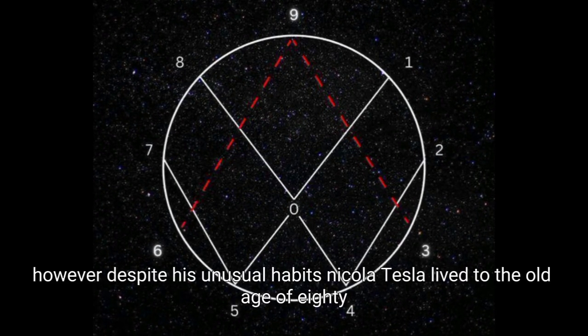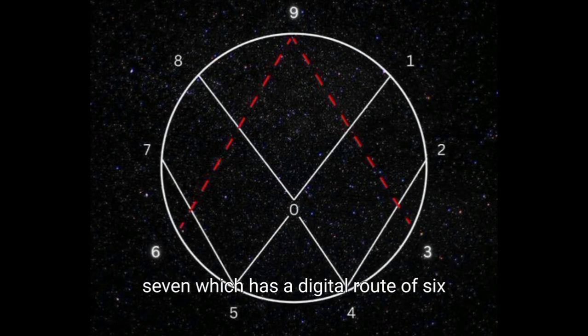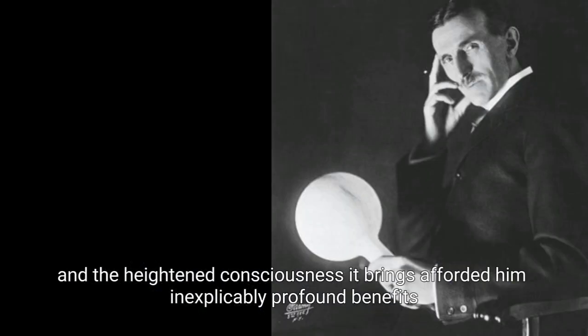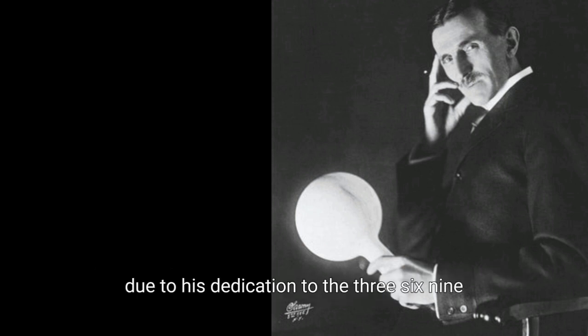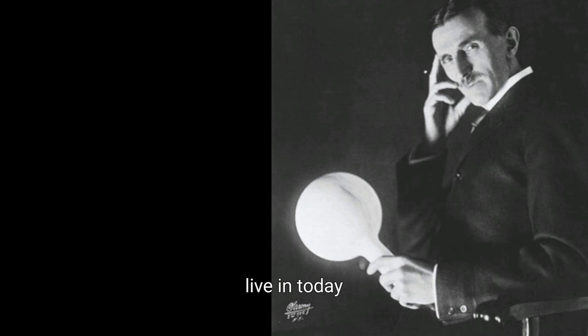However, despite his unusual habits, Nikola Tesla lived to the old age of 87, which has a digital root of 6. His focus on the magnificence of the 369 phenomenon and the heightened consciousness it brings afforded him inexplicably profound benefits. Due to his dedication to the 3, 6, 9, Tesla engineered many inventions and pioneered several innovations that shaped the world we live in today.